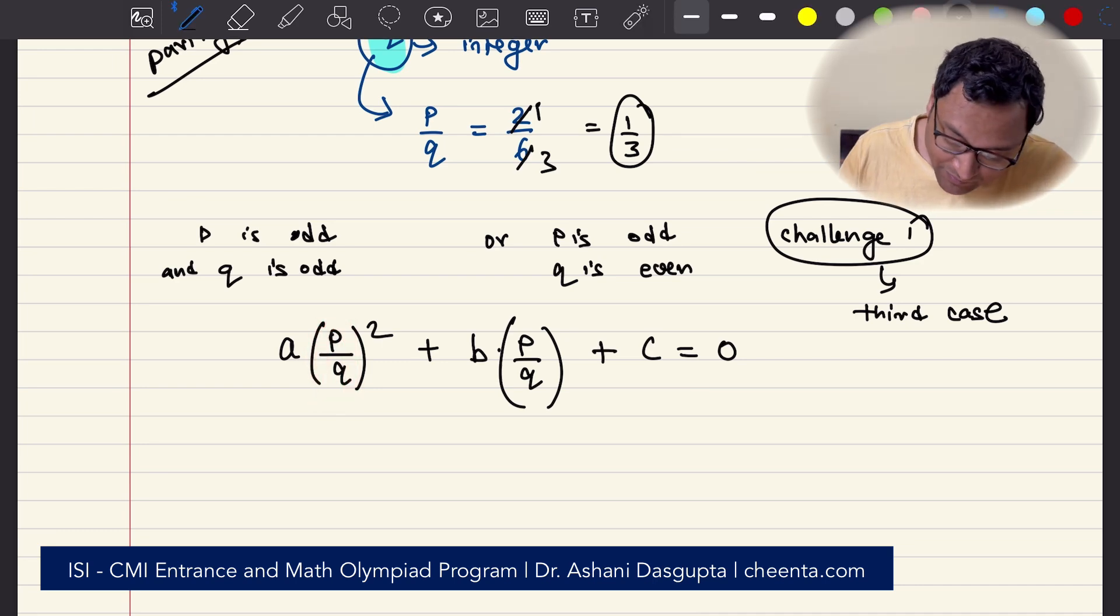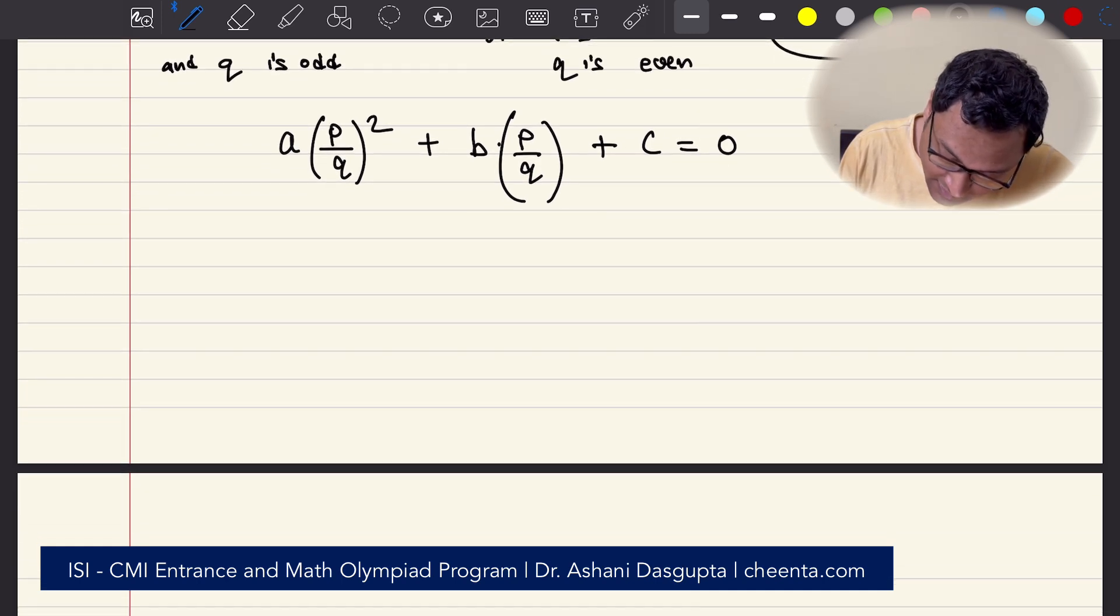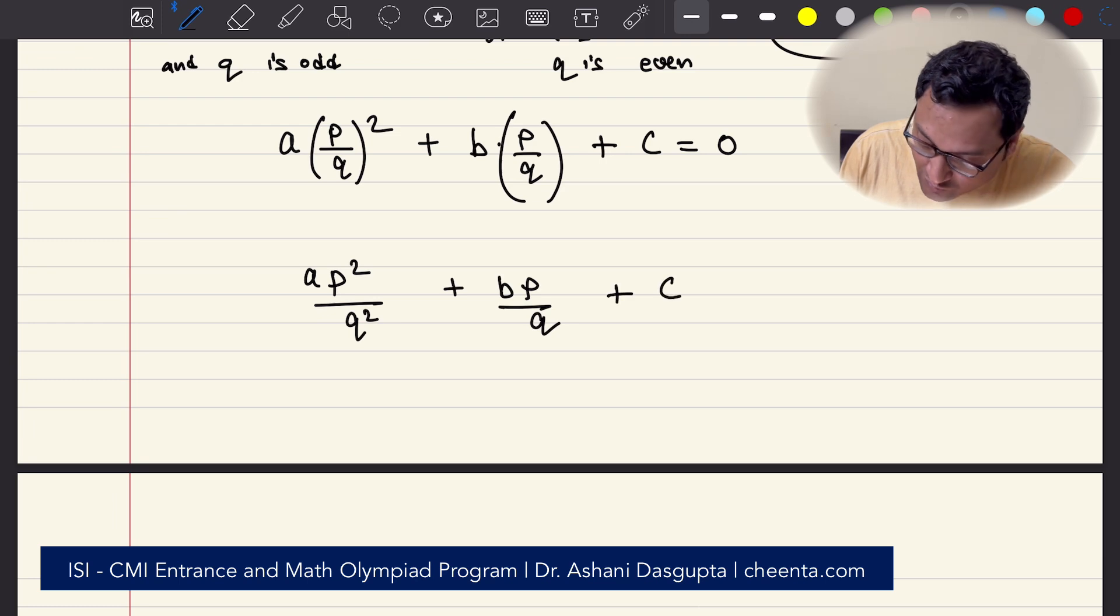Let's simplify this. This is AP² over Q² plus BP over Q plus C equal to 0.